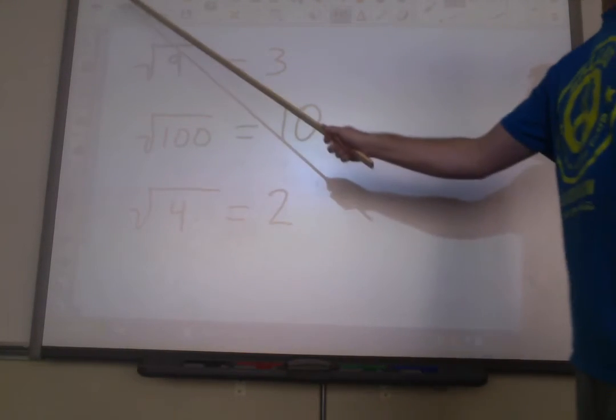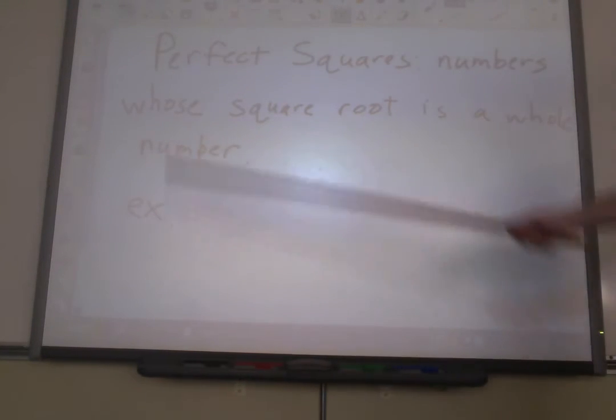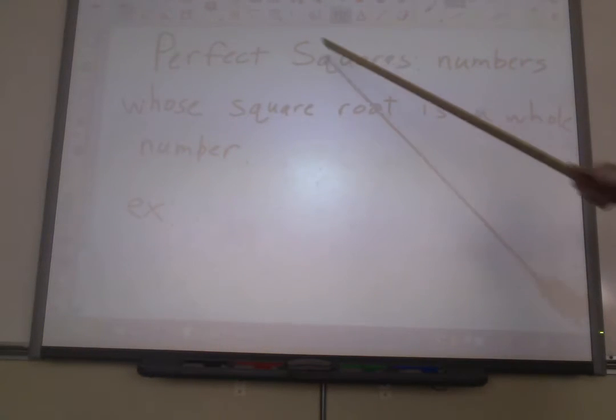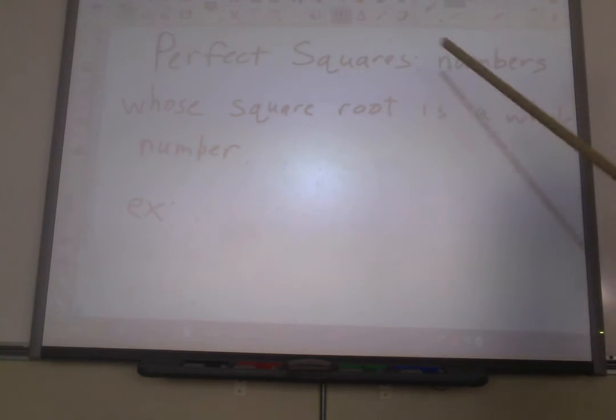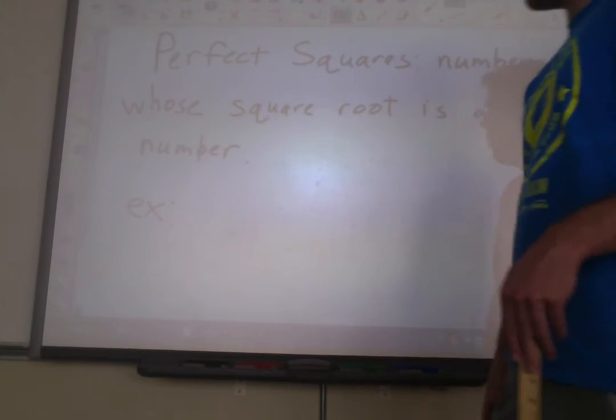Okay, this concept gives rise to a series of numbers that we call perfect squares. Perfect squares. Okay? And perfect squares are numbers whose square root is a whole number. So all the examples we just talked about are perfect squares. I'll give you a few more examples.